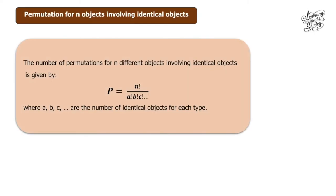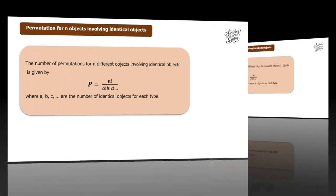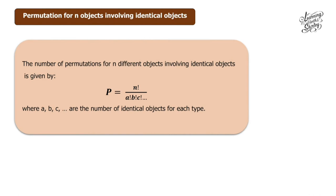In today's video, we're going to learn about permutation for n objects involving identical objects, as well as solving problems in self-exercise 4.4, questions 1 until 4. The number of permutations for n different objects involving identical objects is given by p equals n factorial over a factorial times b factorial times c factorial and so on, where a, b, c, and so on are the number of identical objects for each type. If there are any identical or repeated objects, we have to use this formula.